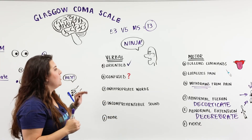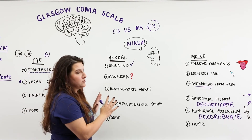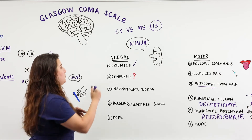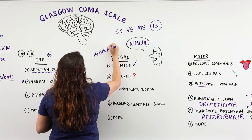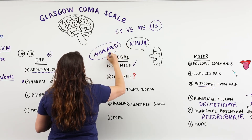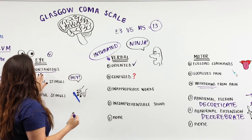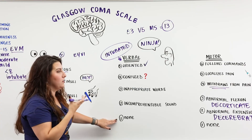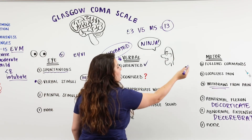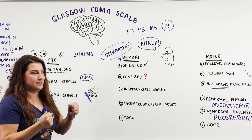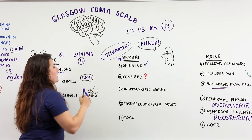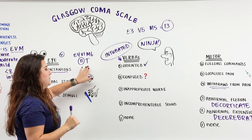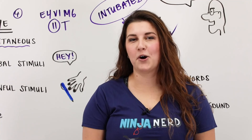One important consideration is comparing the current GCS to the patient's baseline. For intubated patients, you can't assess verbal, so a 'T' is added after the score to indicate intubation. For example, a patient with spontaneous eye opening (E4), unable to verbalize due to the tube (V1), and able to follow commands (M6) would score 11T. This notation indicates the patient is intubated for airway protection, and their verbal function may improve once extubated.